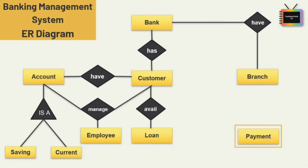From the entity loan, we can create a weak entity set. An entity type should have a key attribute which uniquely identifies each entity in the entity set. But there exist some entity types for which a key attribute cannot be defined — these are called weak entity types. Entity sets which do not have sufficient attributes to form a primary key are known as weak entity sets, and those which have a primary key are known as strong entity sets. A weak entity depends on a strong entity to ensure its existence. In this ER diagram, payment is the weak entity, and 'loan payment' is the identifying relationship.